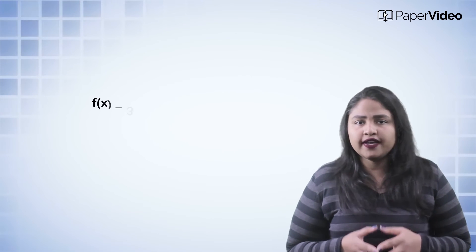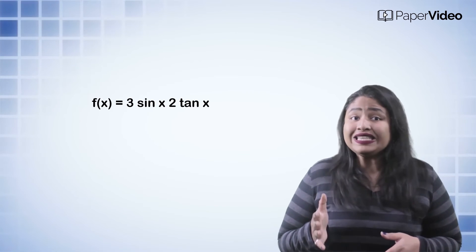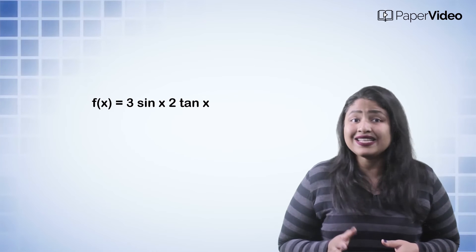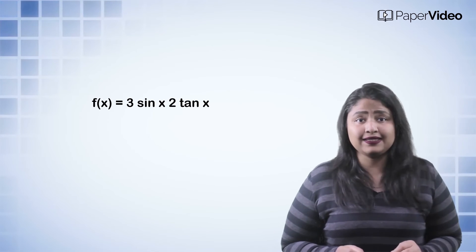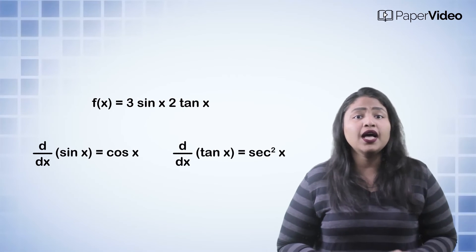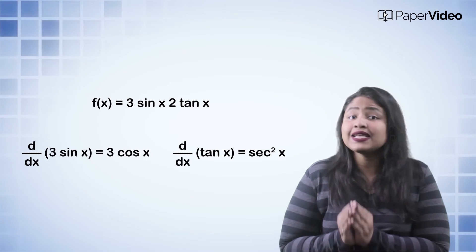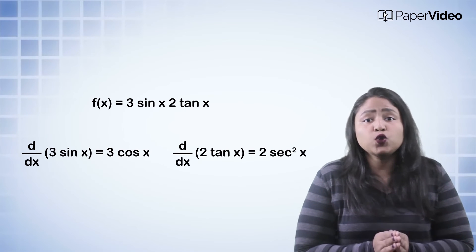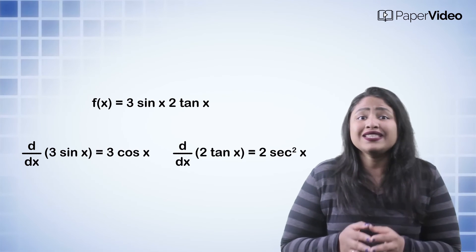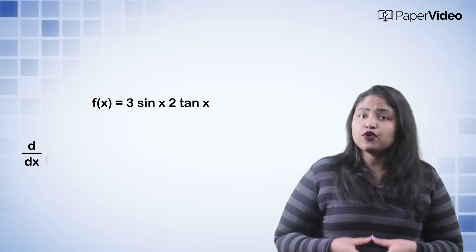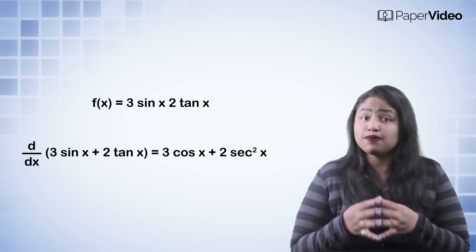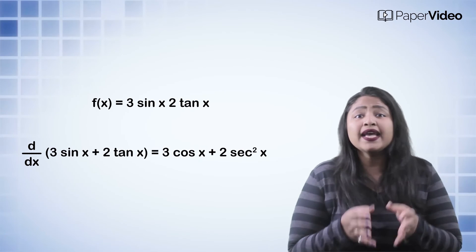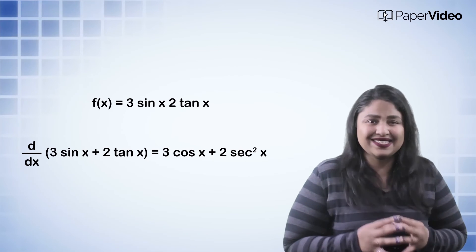Let us now discuss an example to understand these formulas. Suppose we want to find the derivative of the function f of x equals to 3 sin x plus 2 tan x. Using the standard formula, we can write the derivative of 3 sin x as 3 cos x, and the derivative of 2 tan x as 2 sec squared x. Therefore, the derivative of 3 sin x plus 2 tan x will be 3 cos x plus 2 sec squared x.